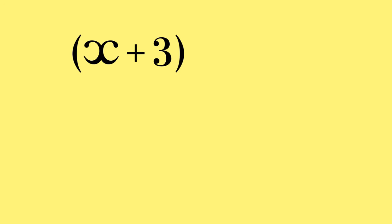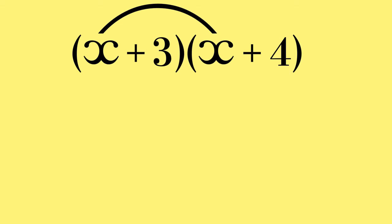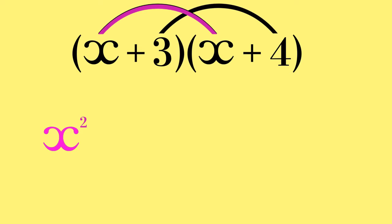So if we had open brackets x add 3, close brackets, and open brackets x add 4, close brackets, we would start with the first eyebrow, which is the first term in the first bracket multiplied by the first term in the second bracket. So we have x multiplied by x, which is x squared. Then we need to multiply the second term in the first bracket by the second term in the second bracket to get the second eyebrow. In this case, we have positive 3 multiplied by positive 4, which gives us positive 12.